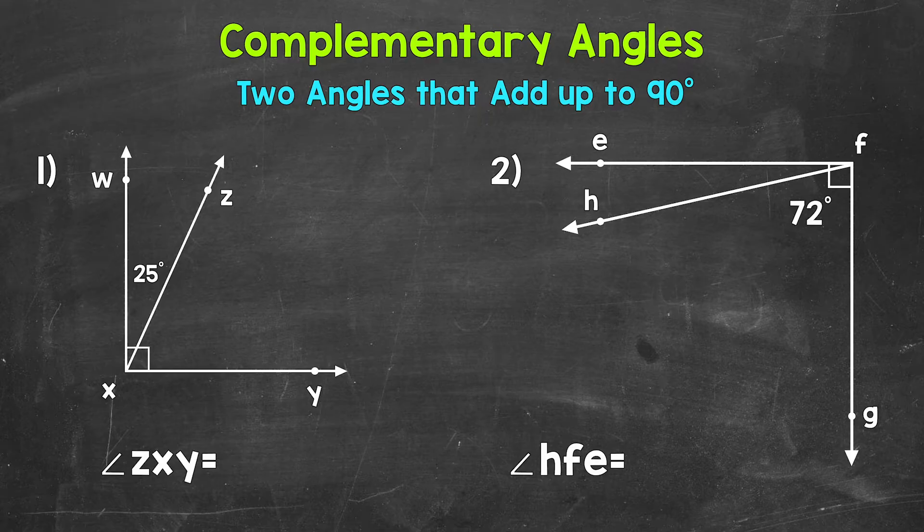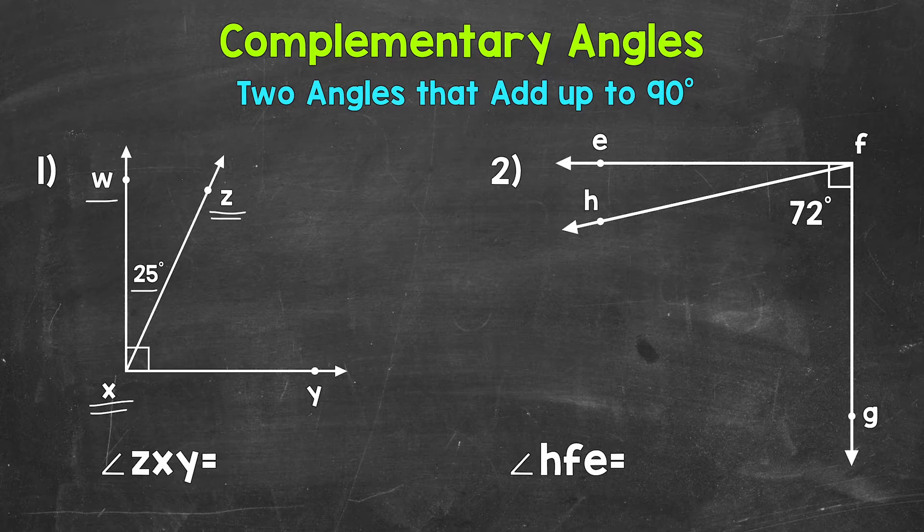Let's jump into our examples where we have complementary angles, but one of the angles will be unknown or missing, and we need to find that missing angle measure. For number one, we are given an angle measure of 25 degrees right here. So angle WXZ equals 25 degrees. We need to figure out the angle measure of angle Z, X, Y.